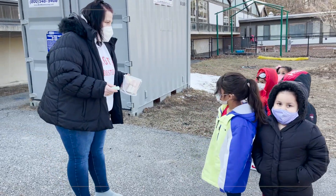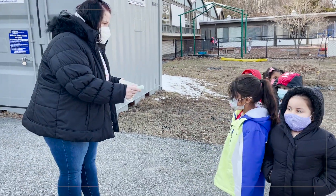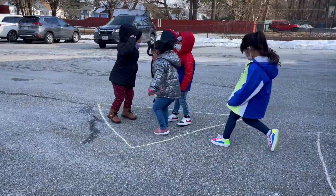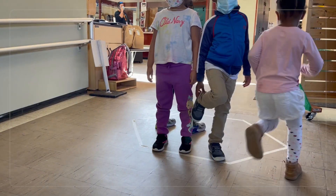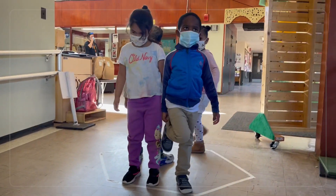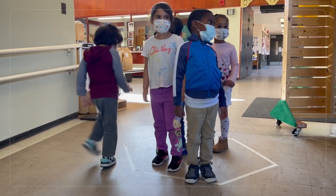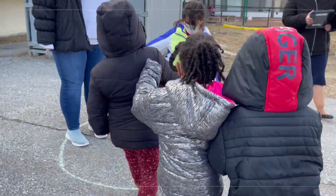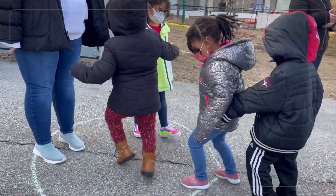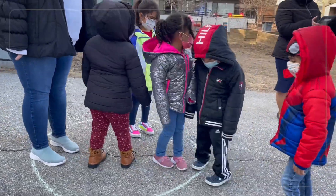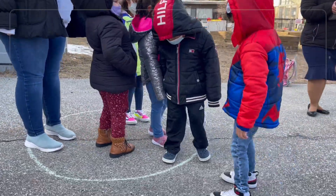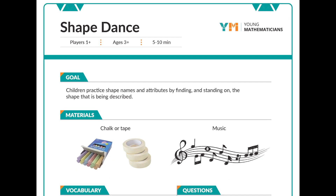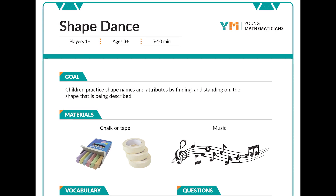You could say stand on a shape that's not a square, or stand on a shape that has more than three sides, or stand on a shape that has no straight sides. You can find more ideas for clues in the instruction sheet for this game on our website.